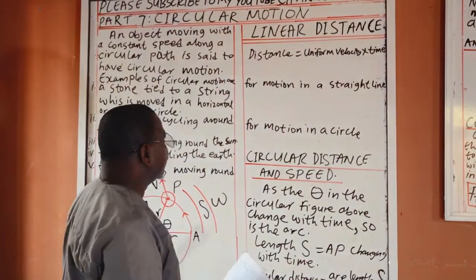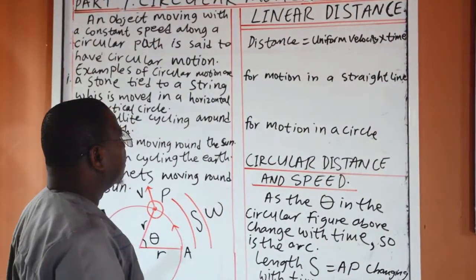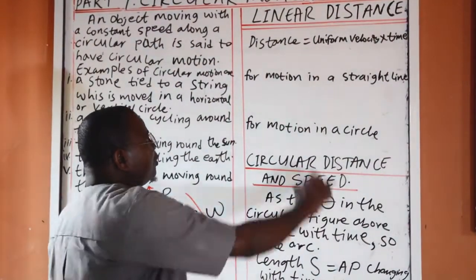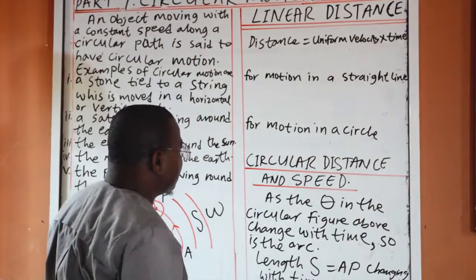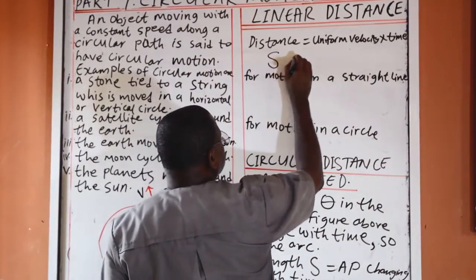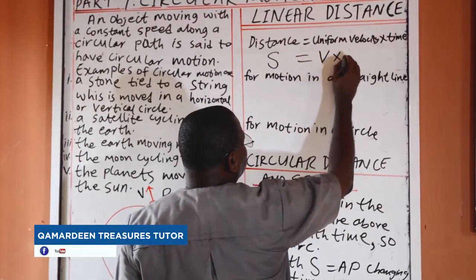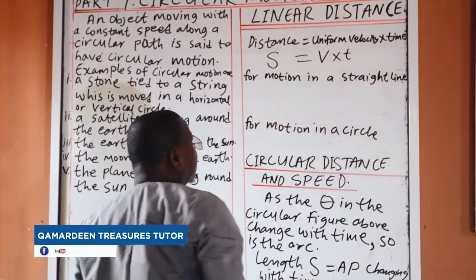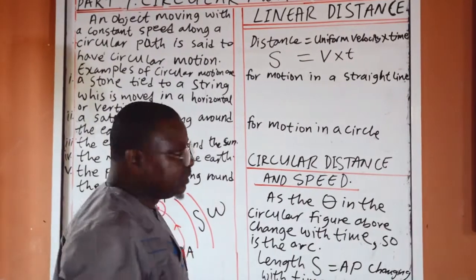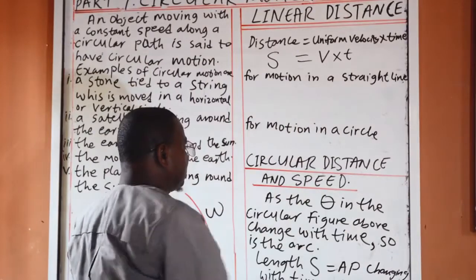Then, we move to angular distance. Now, distance is uniform velocity times time. The symbol of distance is s, the symbol of velocity is v, and the symbol of time is t. That is linear distance, for motion in a straight line.